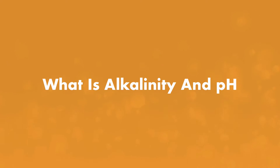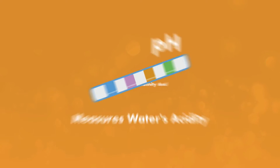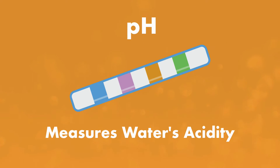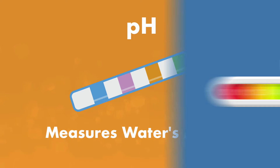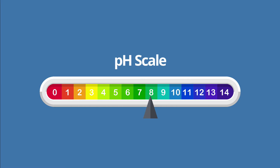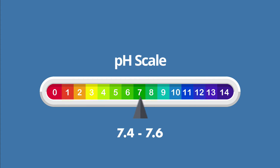What is alkalinity and what is pH? pH is the measurement of how acidic or basic your hot tub water is. Our goal is to keep the pH balance between 7.4 and 7.6.